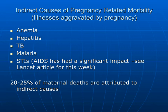The indirect causes are illnesses aggravated by pregnancy, and they are anemia, hepatitis, TB, malaria, and STIs. The Lancet article for this week discusses the maternal mortality ratio and how AIDS has had a significant impact on the MMR. The indirect causes attribute about 20–25% of maternal deaths.